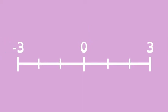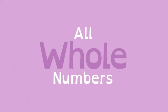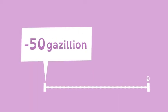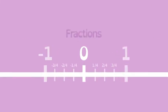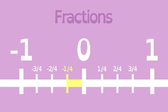Additive inverse is a concept that works for all whole numbers. The additive inverse of negative 50 gazillion is positive 50 gazillion. It also works for fractions. The additive inverse of negative 1 fourth is positive 1 fourth.